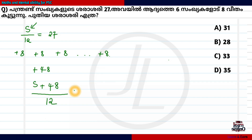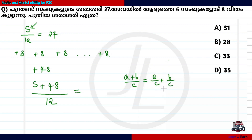This is the equation. We will divide the numerator. We have a rule: this is a plus b divided by c, which equals a divided by c plus b divided by c. So S plus 48, divided by 12.